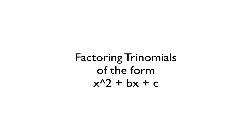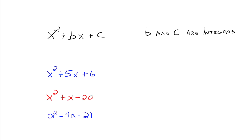In this video I want to talk about factoring trinomials that are of the form x squared plus bx plus c. They would look something like this: x squared plus bx plus c, where b and c are integers. Some examples would be x squared plus 5x plus 6, x squared plus x minus 20, or even a squared minus 4a minus 21 — it still fits that form, where b would be negative 4 and c would be negative 21.